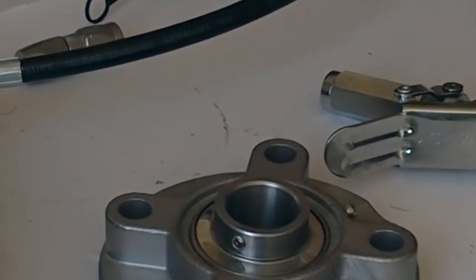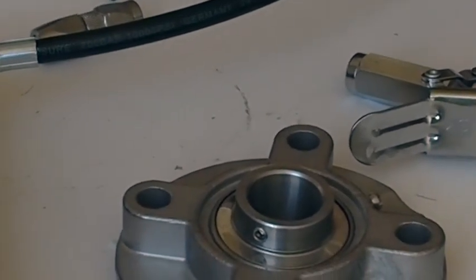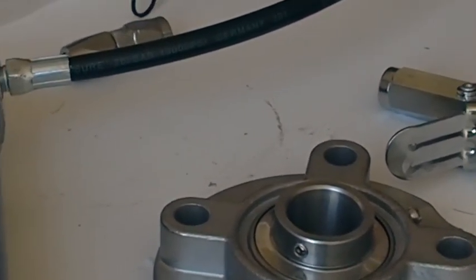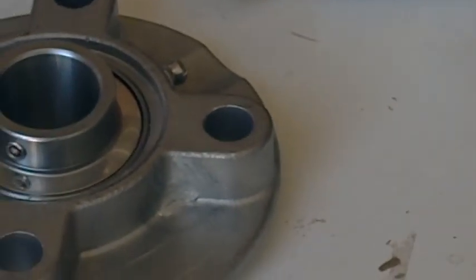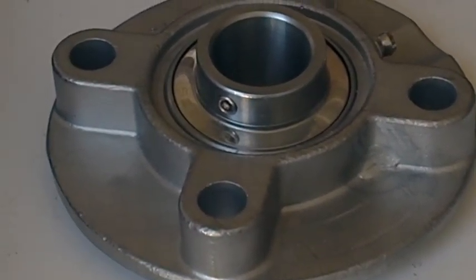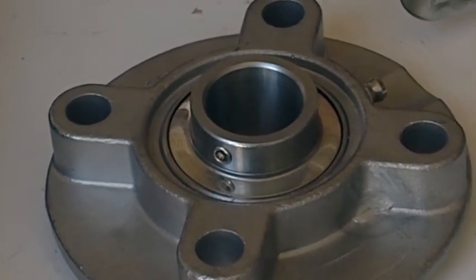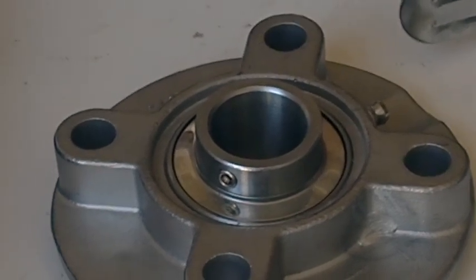The back bearing has a zerk fitting similar to what you see here that you have to use a grease gun to grease. On the BC 5 it's the same way.